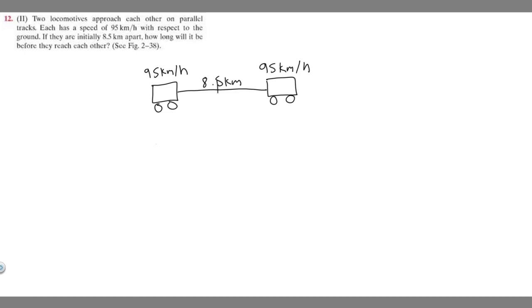We're trying to find when they're going to meet. Since they travel the same exact speed, you know they're going to meet in the middle, exactly in the middle of this 8.5 kilometers. Because if one was traveling faster than the other, it would travel more distance. But since they're traveling the exact same speed, they're just going to travel the exact same distance.